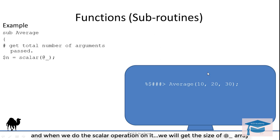We know that @_ is an array containing all arguments. And when we do the scalar operation on it, we will get the size of the @_ array, which means we will get the number of arguments passed to this function. And if we want to store all arguments passed to this function in variables one by one, we can do so like this.